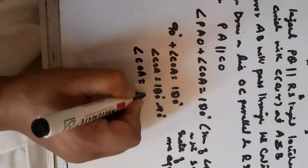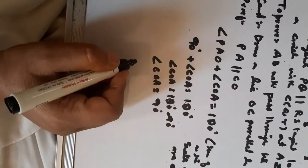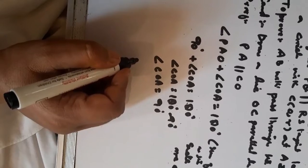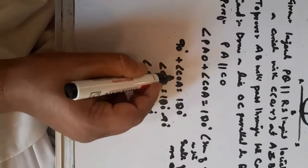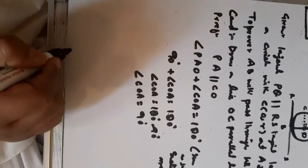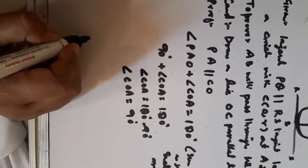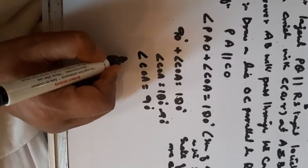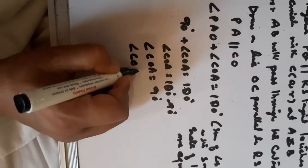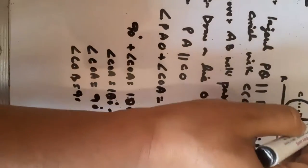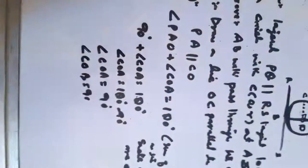So angle COA equals 90 degrees. Similarly, angle COB equals 90 degrees, using the theorem that the angle between a tangent and radius is 90 degrees. Therefore, angle COA plus angle COB equals 90 plus 90, which is 180 degrees.